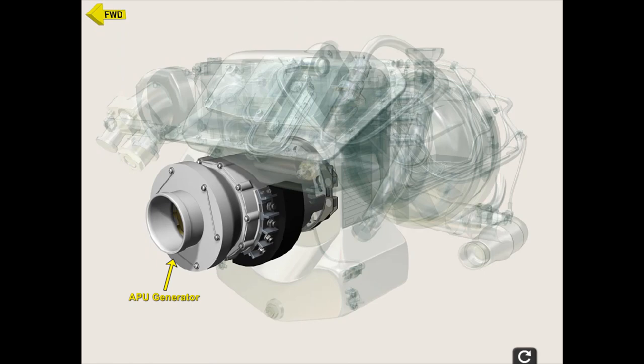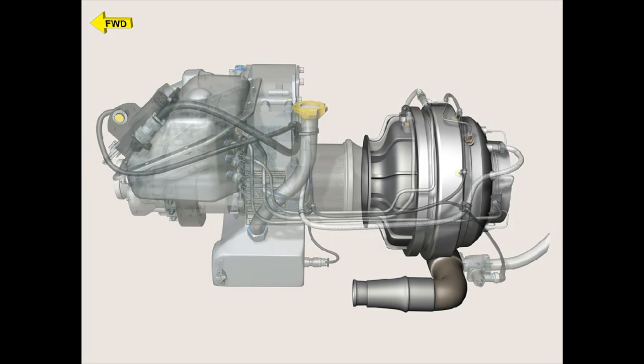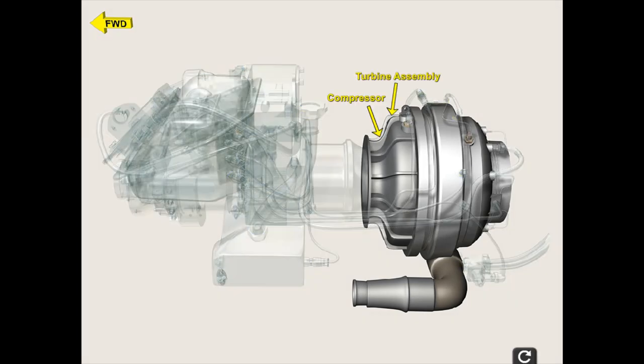If the main generators fail in flight, the APU can be started and the APU generator turned on to provide emergency AC electrical power. The APU consists of a gas turbine power section, reduction gear drive, and appropriate controls and accessories. The gas turbine power section is a simple centrifugal compressor and a single stage radial inflow turbine.